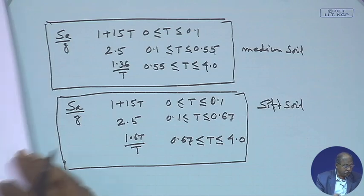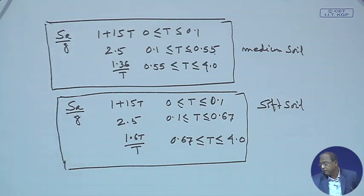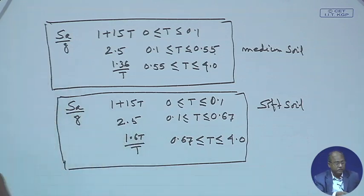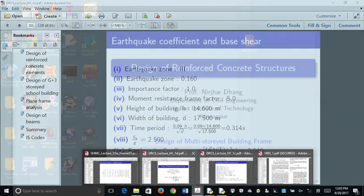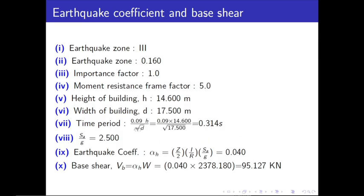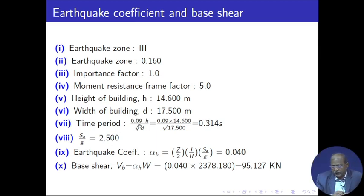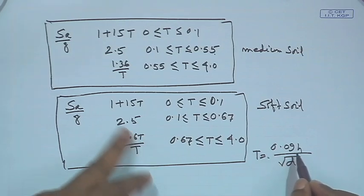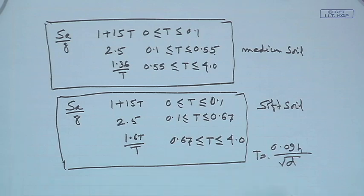The next question is: what is the value of T? We have taken the time period as T = 0.09H/√D. With this we know all the information needed.